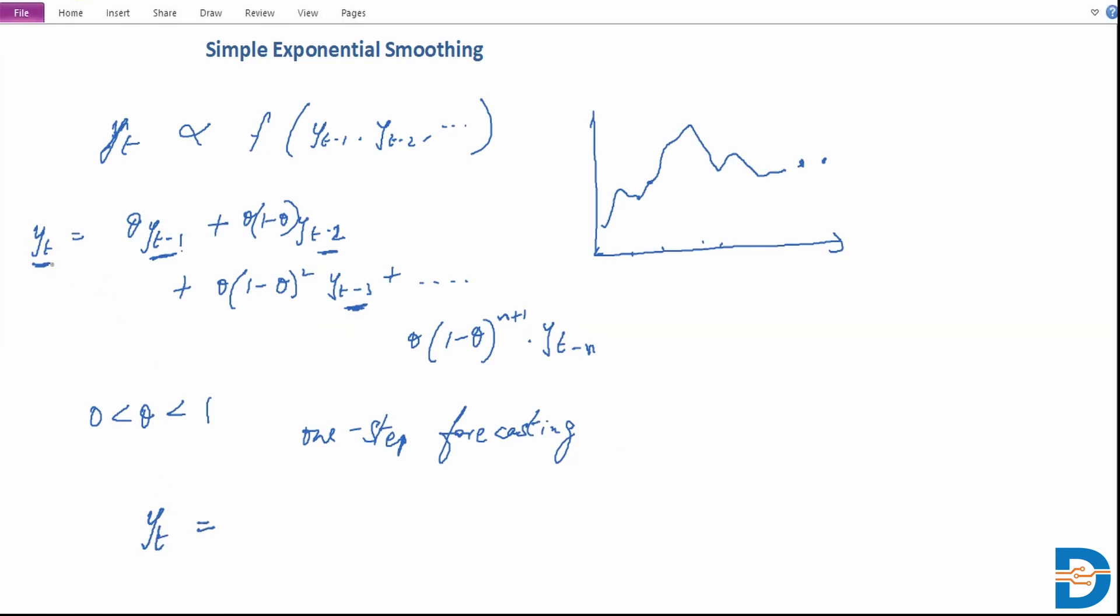One-step forecasting would have ŷ_t, the prediction that we are looking to gain, as theta times y_{t-1} plus (1-theta) multiplied by the predicted value for t-1, which is ŷ_{t-1}. This essentially is the same as the first equation that we've put down. This is putting it in another way - we have this equation 2.